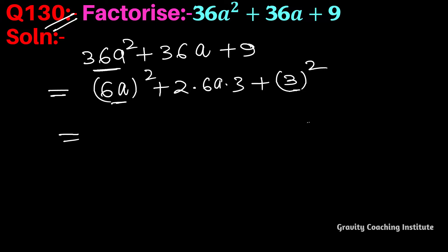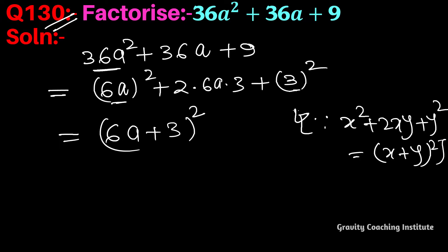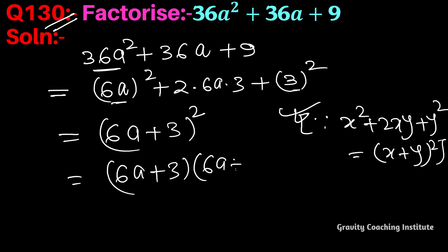This expression is in the form x² + 2xy + y², so it becomes (6a + 3)² according to this identity. This gives us (6a + 3) into (6a + 3), which is the required answer.